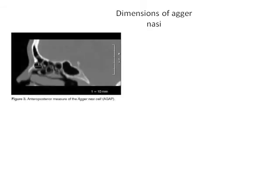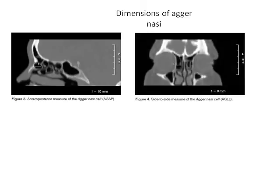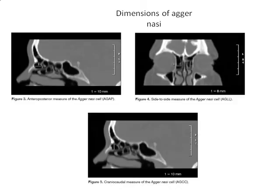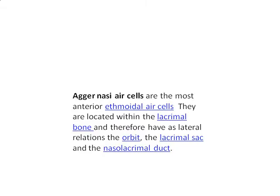Dimensions of the agar nasi: this shows the anterior-posterior measurement, the side-to-side measurement, and the craniocaudal measurement of the agar nasi cell. The agar nasi cells are the most anterior ethmoidal cells located within or adjacent to the lacrimal bone, and therefore have as lateral relations the orbit, the lacrimal sac, and the nasolacrimal duct.